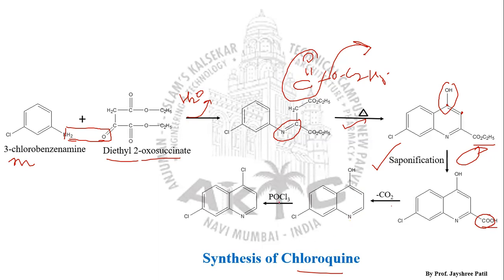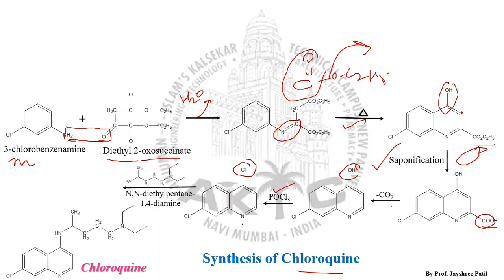The 4-hydroxyquinoline gets chlorinated by using POCl₃. The OH group is replaced by chlorine using POCl₃, and we get the chlorinated quinoline.